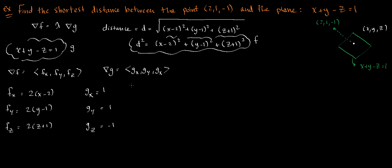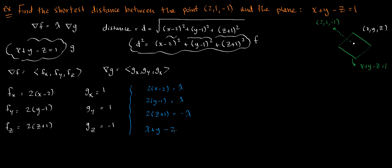The next step is to form the equations. We know that 2 times (x minus 2) equals lambda times 1, which is lambda. And 2 times (y minus 1) equals lambda times 1, which is lambda. And 2 times (z plus 1) equals negative 1 times lambda, which is negative lambda. So now we have 3 equations and 4 unknowns, so we need to introduce a fourth equation — the constraint: x plus y minus z equals 1. These are equations 1, 2, 3, and 4.